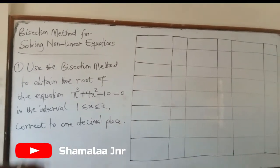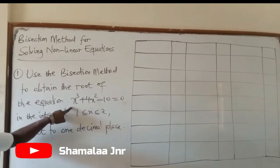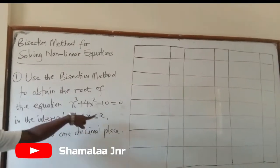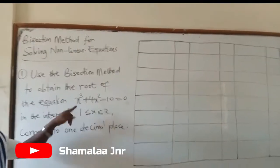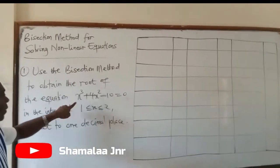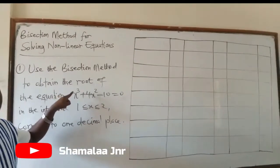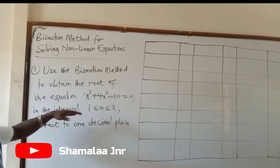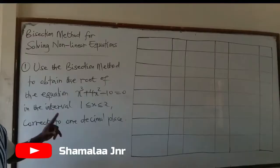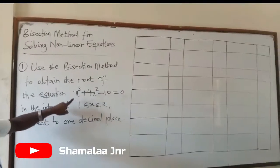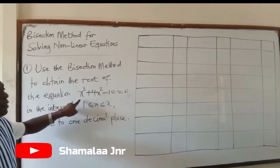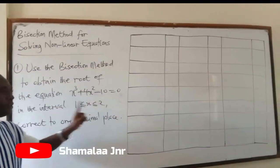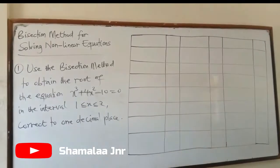Now let's look at the question. The equation is non-linear. It is non-linear because the highest power of X is 3. If the power is more than one, then it is non-linear. So this one is non-linear — it is a cubic equation.